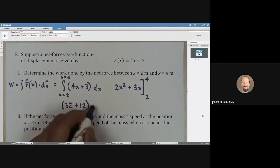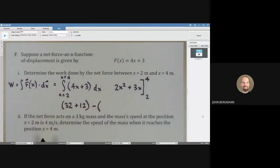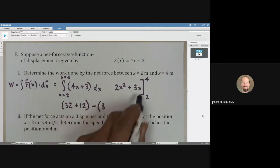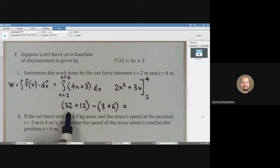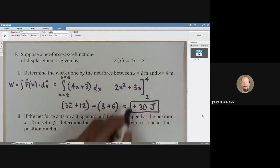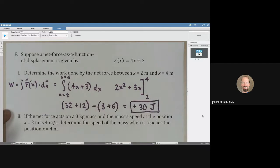That's at the upper limit. And then we subtract off what we have at the lower limit. We put a 2 in here, that's going to give us 8. Put a 2 right there, that's going to give you 6. So I'm seeing here 32 plus 12 minus 14. I'm getting positive 30 joules. That's how much work was done by the net force when the object moved from x equals 2 to x equals 4 meters.